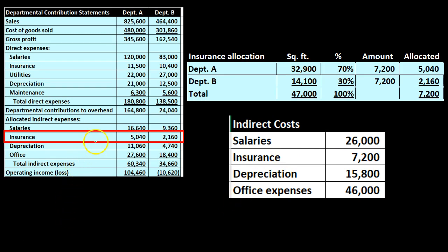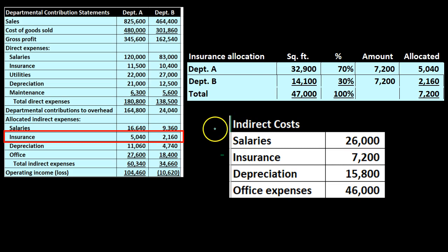Now we do the same thing for insurance using a different activity base. We have Department A and B. Instead of sales, we will use square footage. Department A uses 32,900 square feet and B uses 14,100, totaling 47,000. Square footage does not have to be a component of the actual insurance bill — we simply decided it is an appropriate way to allocate the $7,200 insurance cost to two departments of different sizes, since dividing evenly does not seem appropriate.